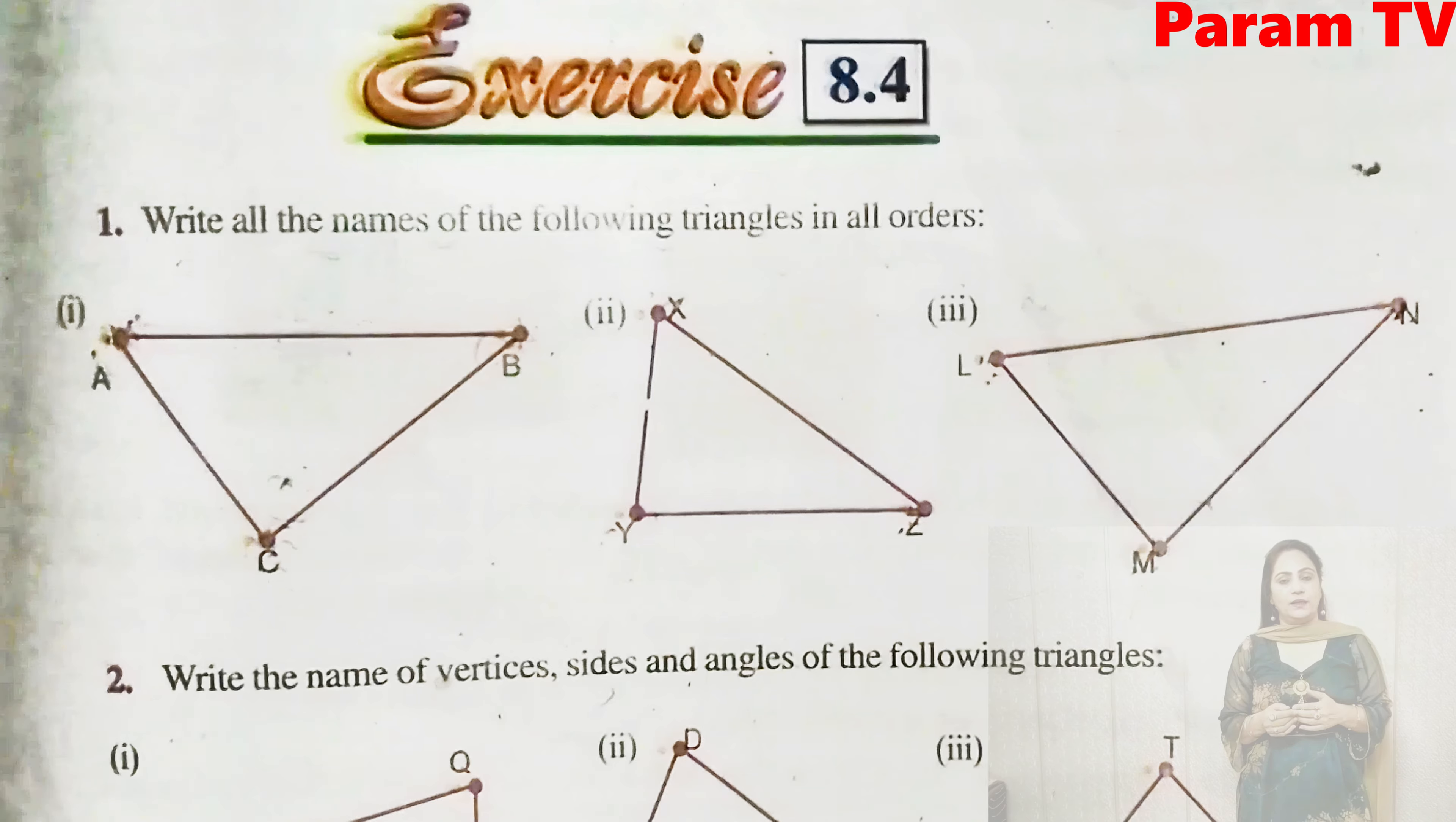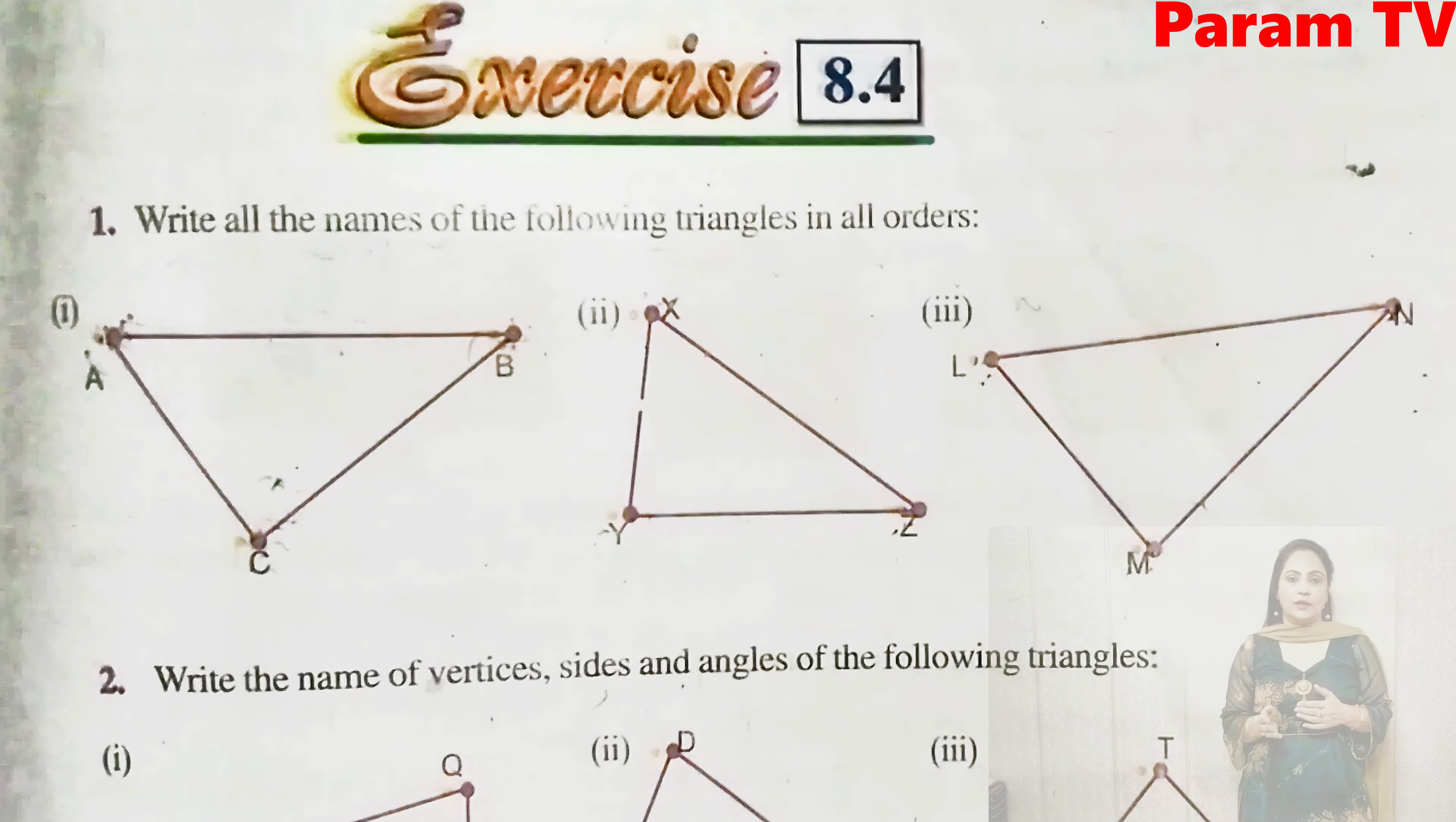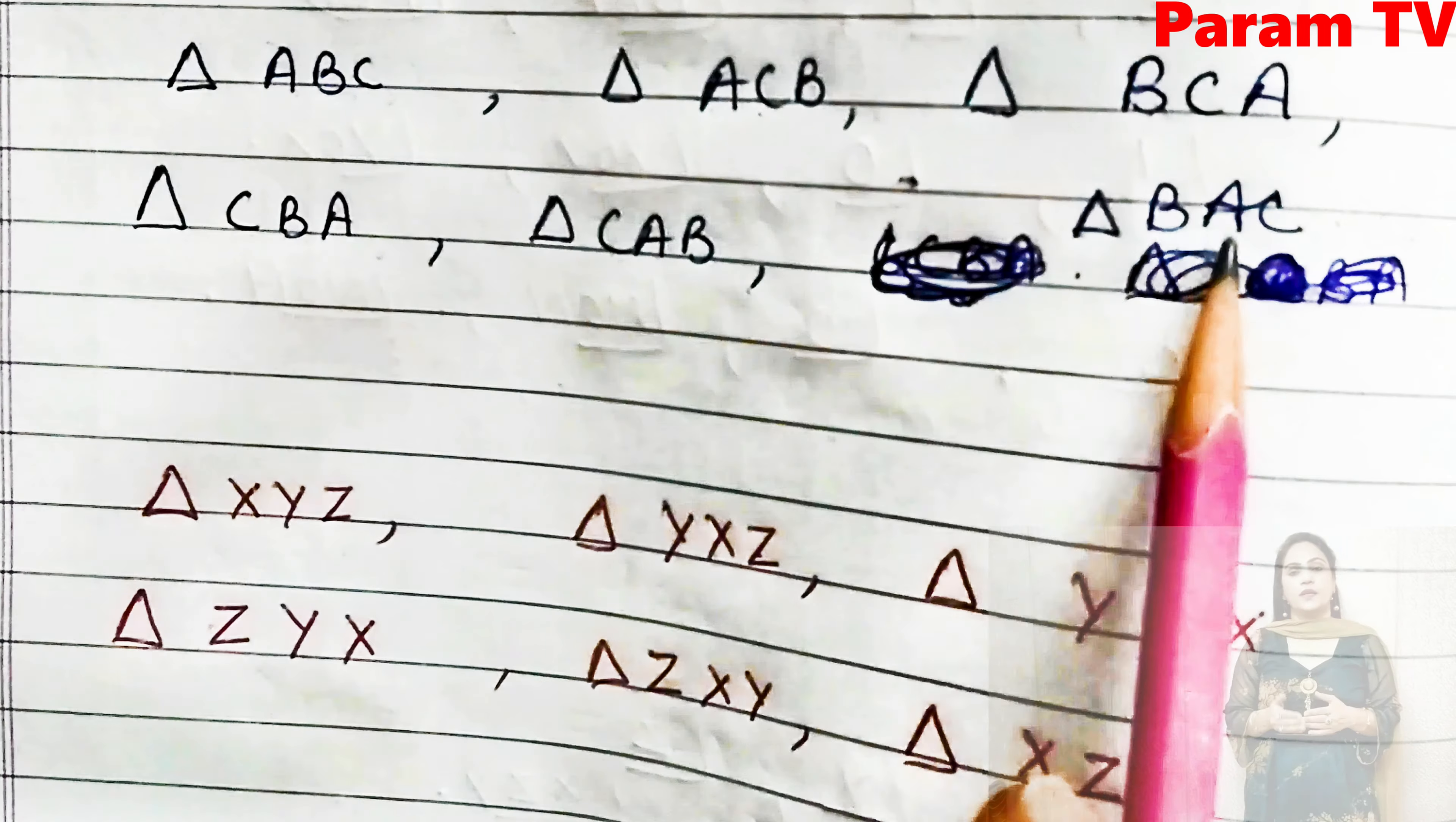Triangle ko six ways mein represent kiya ja sakta hai. I have written it for you. You can see this. See, triangle ABC, ACB, BCA, CBA, CAB, BAC. In every possible way you can write the name in any possible way.